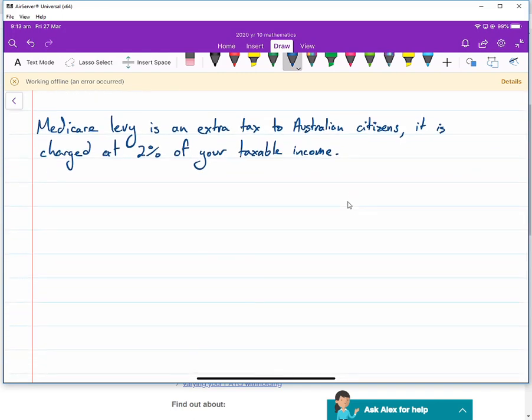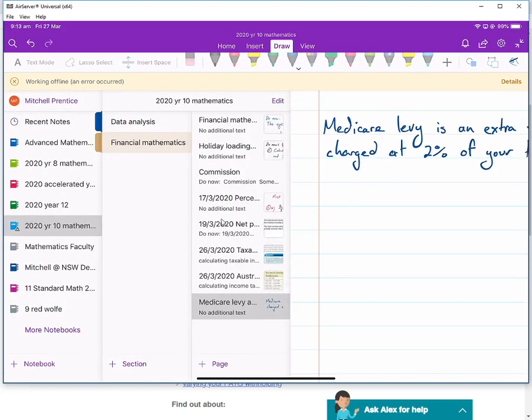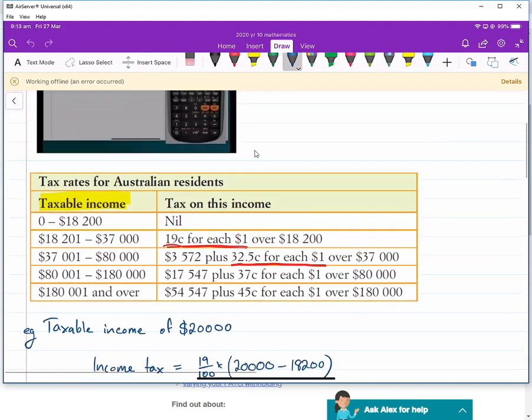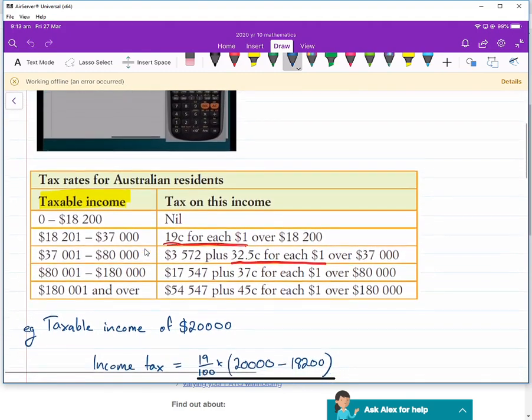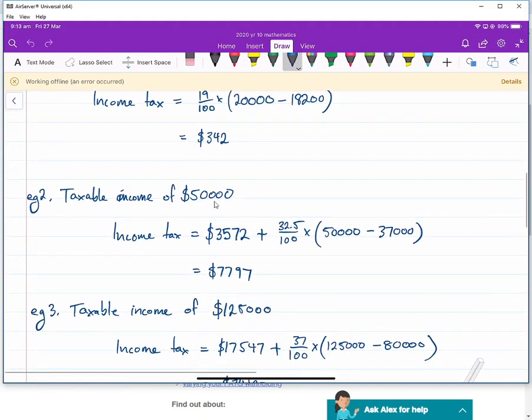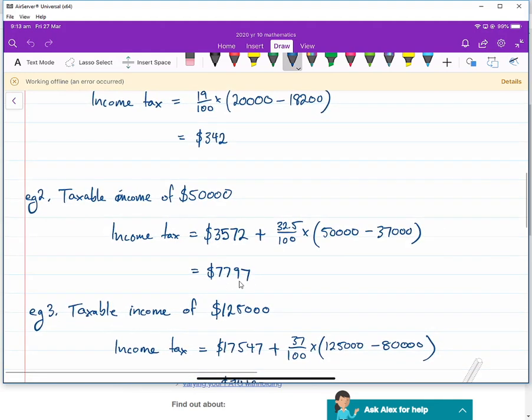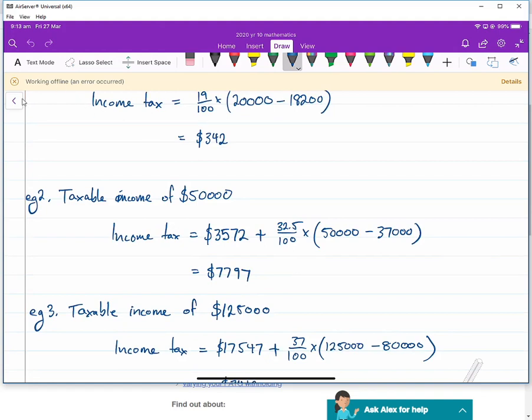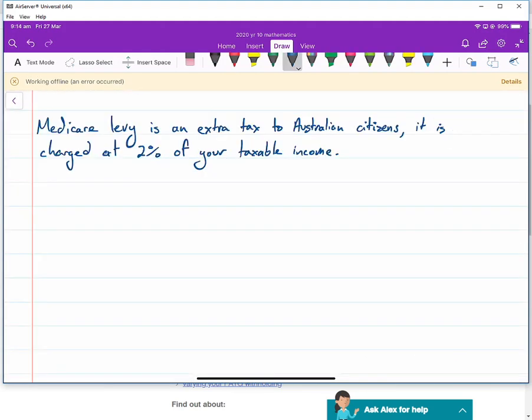So what does this mean for us? In our previous session, we looked at income tax. If you had a taxable income of $50,000, you paid $7,797 income tax. We would add to this the Medicare Levy. Let's go through and see what that is.